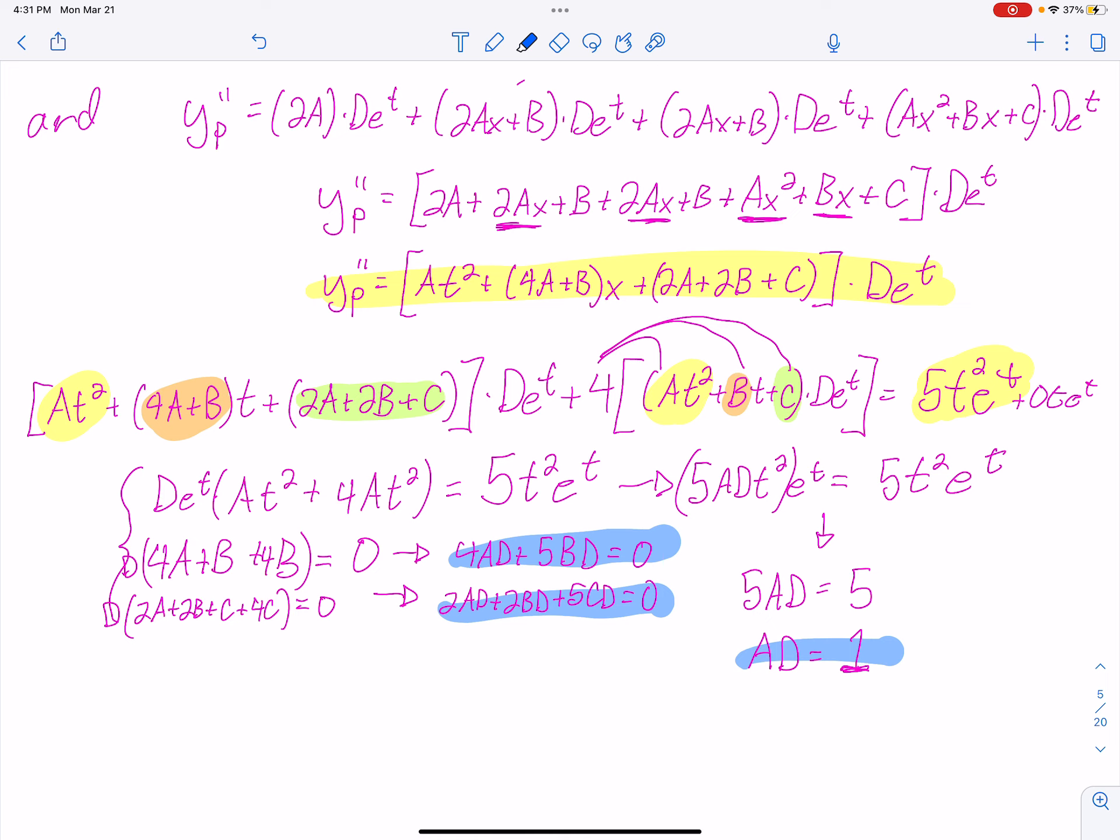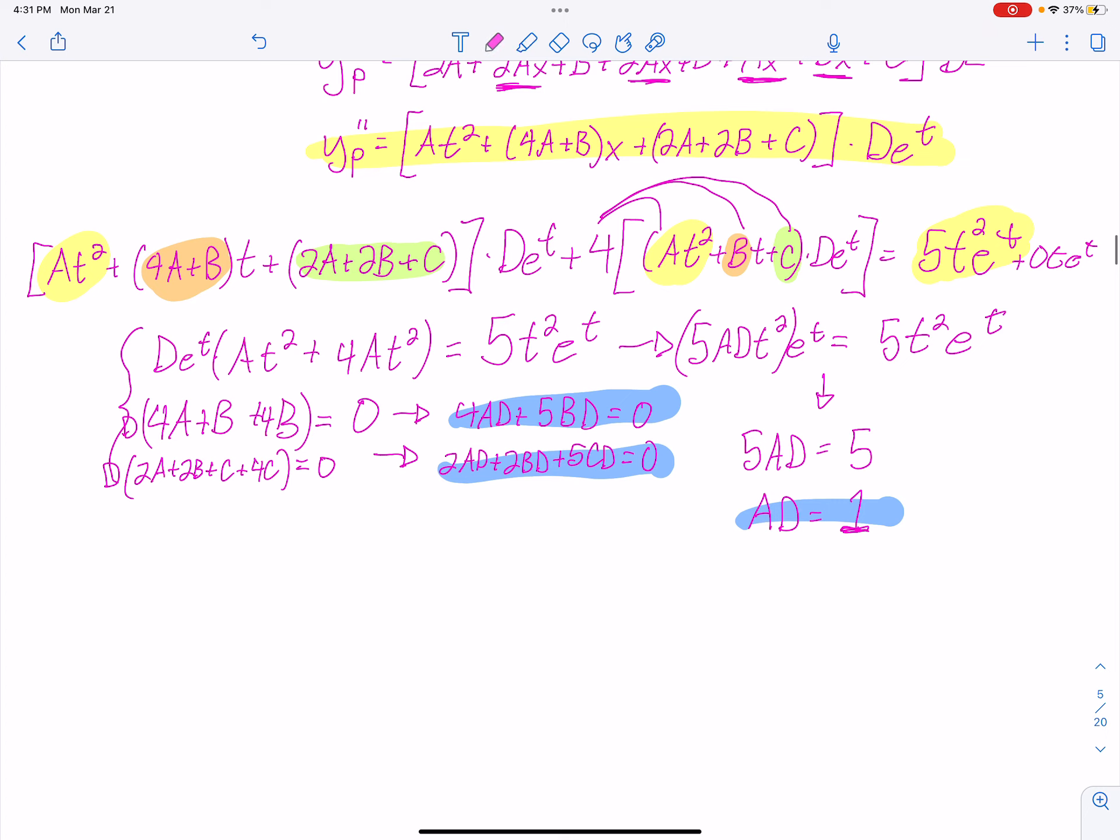This kind of problem, it's not too bad. I would probably, on assessments, look for something a little simpler. So I have those three. I can find out what BD is from here. AD is 1. So I'm going to take this equation. 4 times 1 plus 5BD equals 0. So I get 5BD equals -4, which means BD is equal to -4/5.